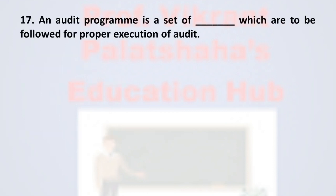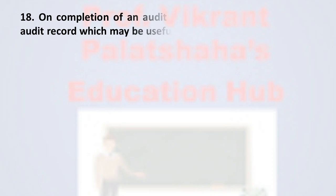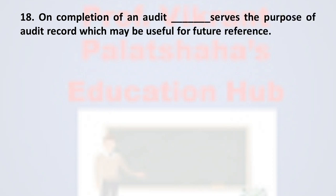Question number seventeen: an audit program is a set of — which are to be followed for proper execution of audit. Option A rules, option B policies, option C instructions, and option D actions. The correct option is option C, instructions.